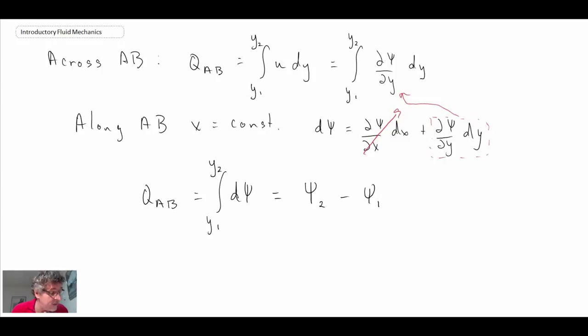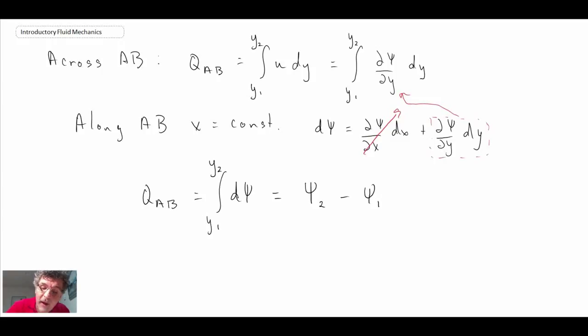Now what we're going to do is do this for another one of the lines. We'll look at the line BC. So we'll now work on this one. Let's take a look at the volumetric flow rate between those, or along that line.